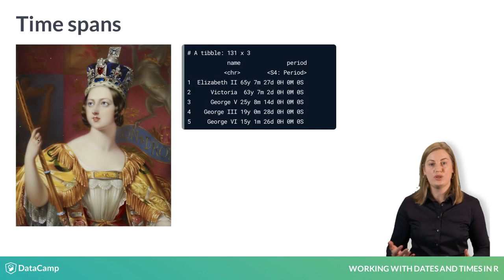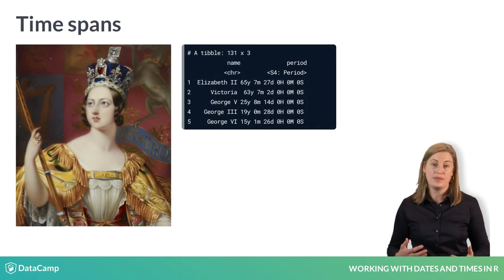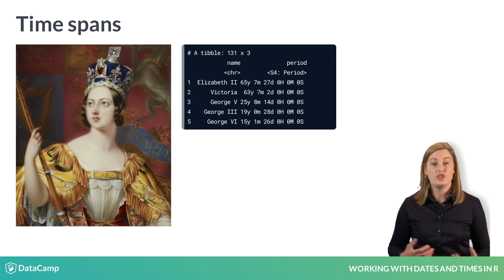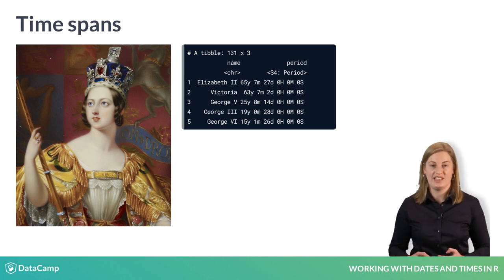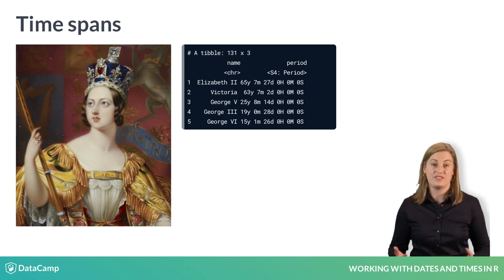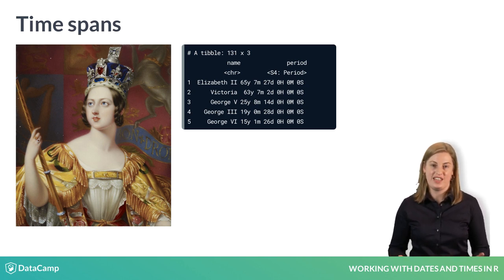Lubridate also has special objects for handling time spans — the time that passes between two time points. You'll learn how to use time spans to generate sequences of datetimes and calculate the length of time intervals, like the length of reigns of kings and queens of England.